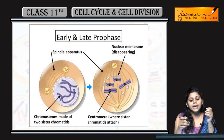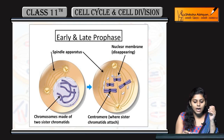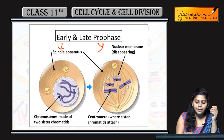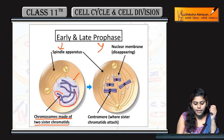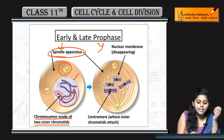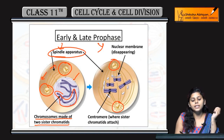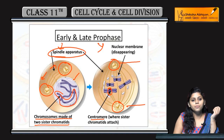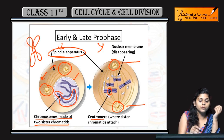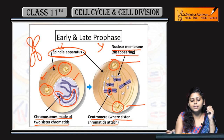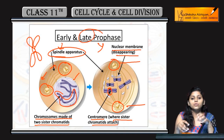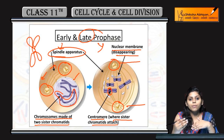In case of pro phase ke end tak pahunchte pahunchte, you can see early pro phase and late pro phase. Early pro phase me aapko nuclear envelope dikha raha hai, chromosome made of two sister chromatids dikha raha hai, long threads and spindle apparatus dikha raha hai — these are centrioles, alag-alag poles me apart. Late pro phase tak aate aate centrioles dono alag-alag poles me present hongi. Centromere — chromatids ke center ka part hota hai — jo chromatids ko hold karke rakhta hai, where sister chromatids attach. So nuclear membrane starts disappearing in late pro phase. So ye tha pro phase.